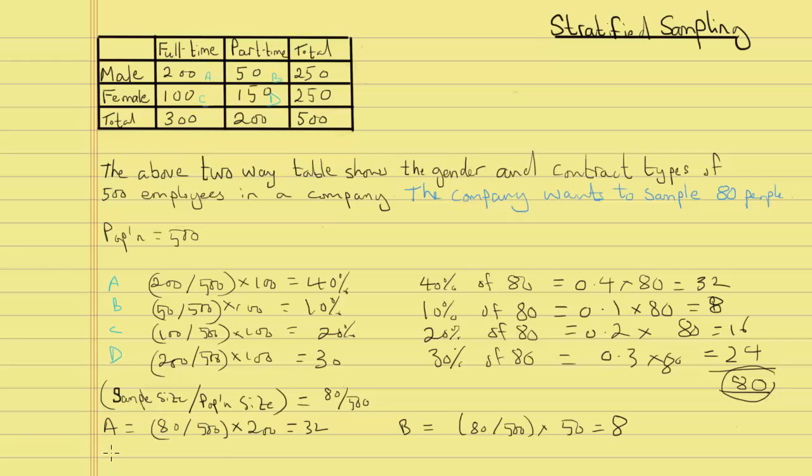For group C we do 80 over 500 multiplied by 100 and we get 16. For group D we have 80 over 500 multiplied by 150 and we get 24.